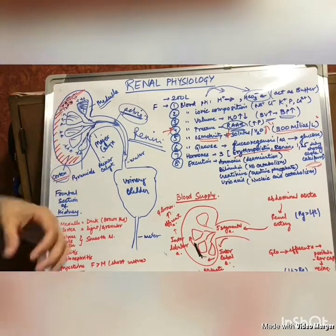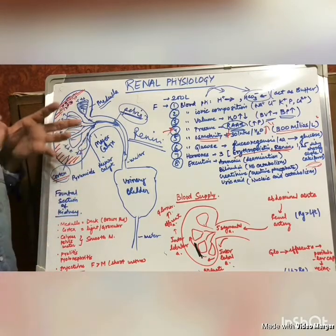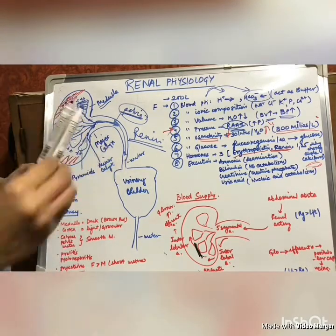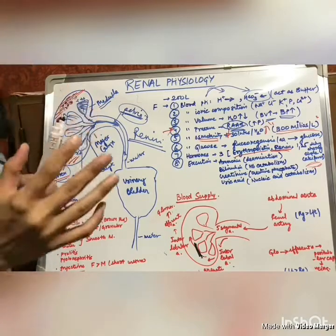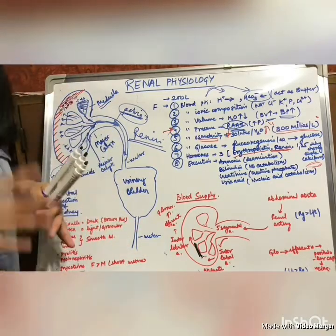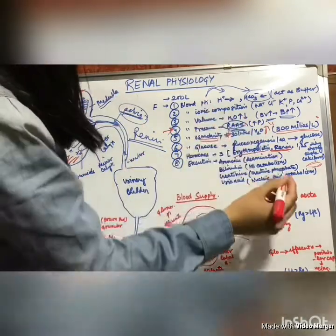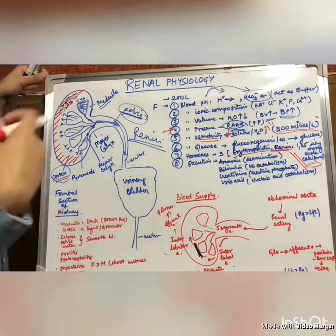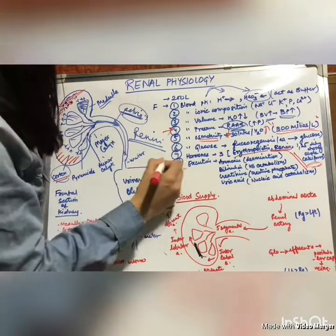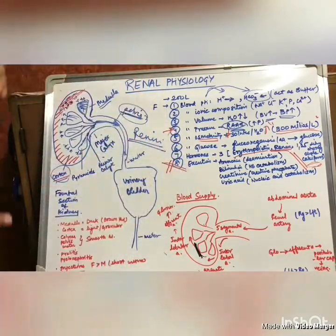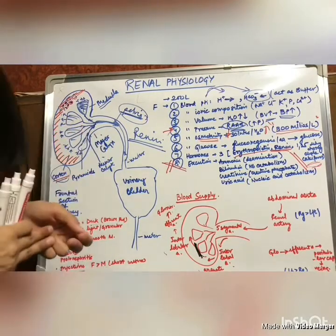1,25-dihydroxycholecalciferol is the active form of vitamin D, and it is important because it regulates calcium homeostasis in the body. Homeostasis means maintaining normal levels — whether fluids, temperature, or other parameters — at a normal state. So this active form of vitamin D takes part in the regulation of calcium homeostasis. The eighth and most important function is excretion.